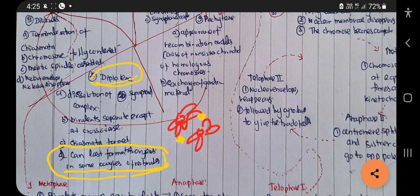In diakinesis there will be terminalization of chiasmata — the chiasmata formed in diplotene get terminalized in diakinesis. The chromosomes get fully condensed, the meiotic spindle gets assembled, and the nuclear envelope and nucleolus disappear.